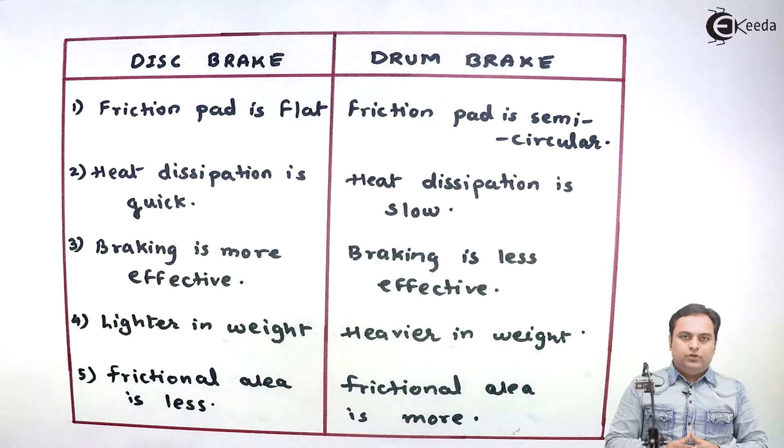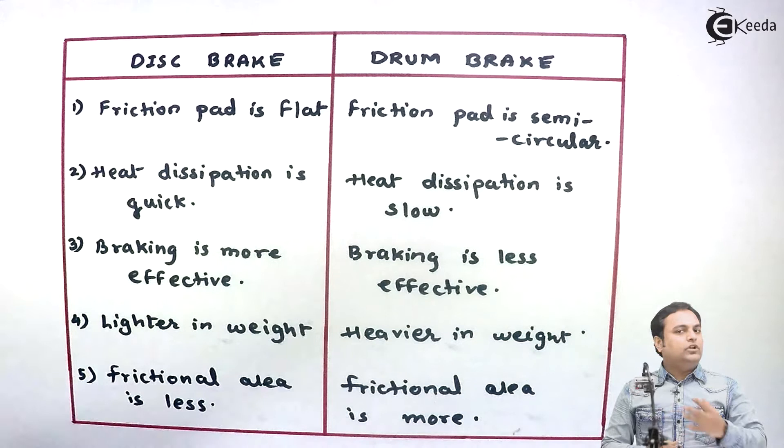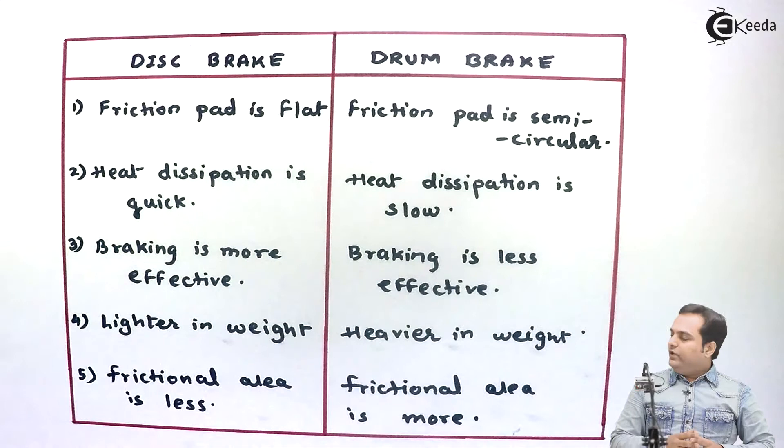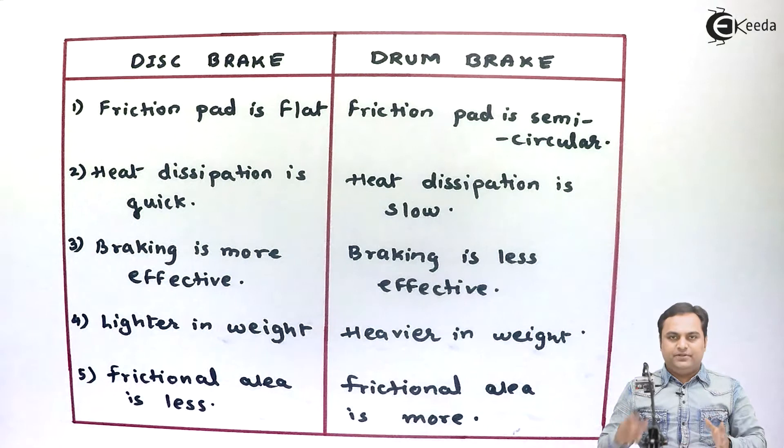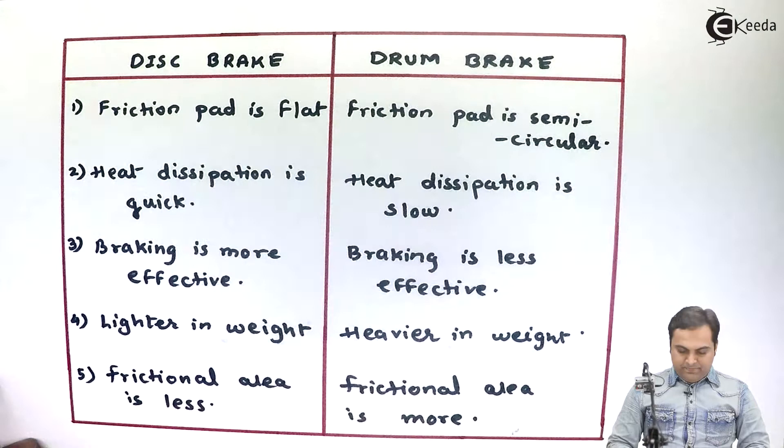The kinetic energy of the wheel is converted into heat energy. If we are not dissipating that heat, the brake surface gets worn out. Heat dissipation is a very important property — a brake is more efficient if it is able to release heat quickly. Disc brakes are very quick in heat dissipation, whereas in drum brakes heat dissipation is slow.